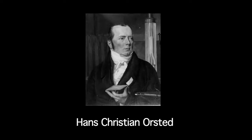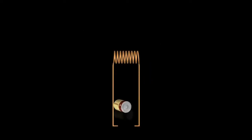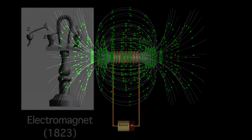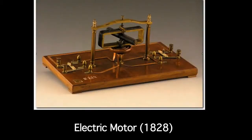In the 17th century, Hans Christian Orsted found that an electrical current in a wire produces a magnetic field. This discovery led to many innovations in the technological world, including the invention of electromagnets and the first electric motor.